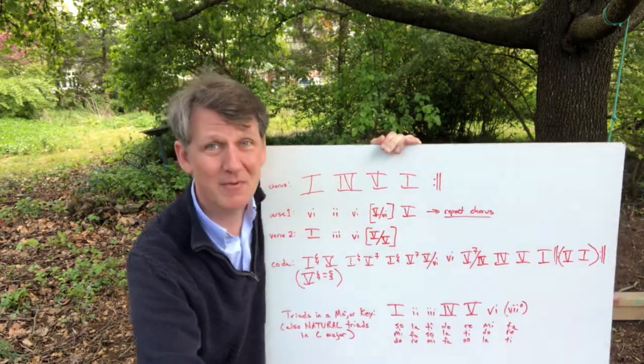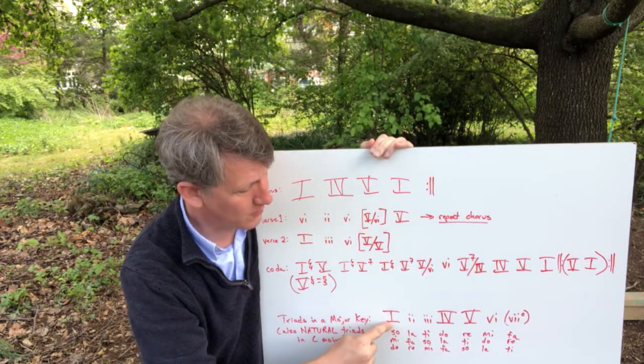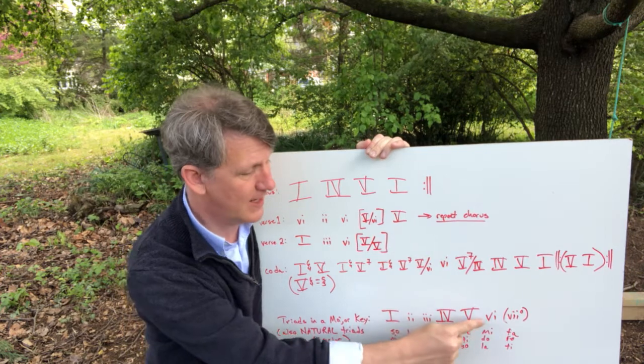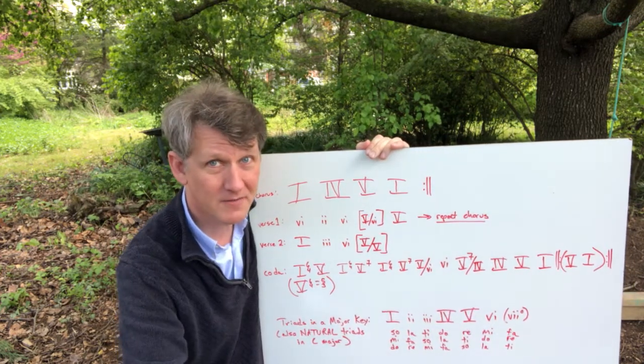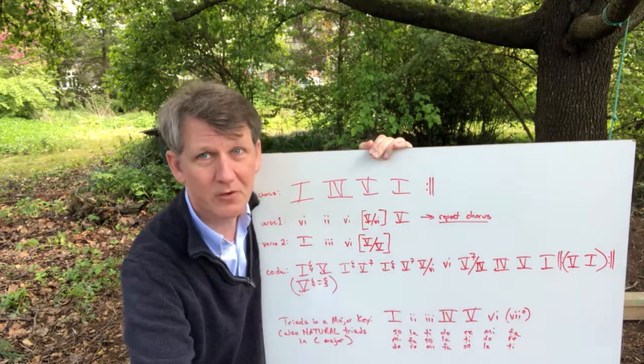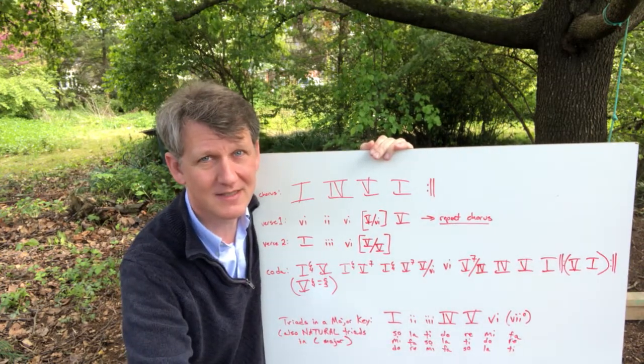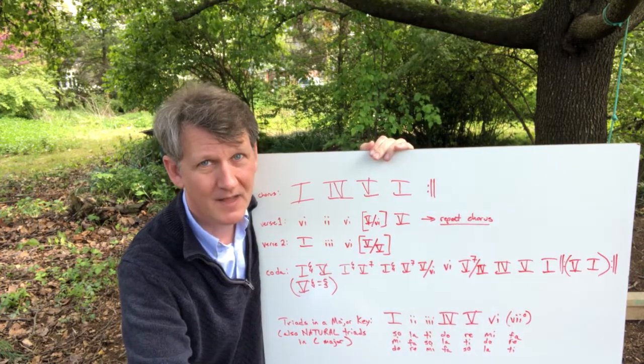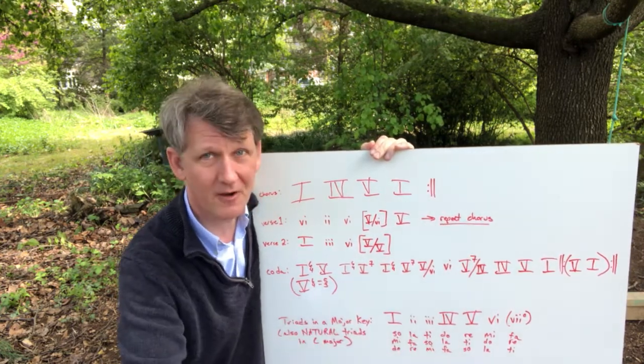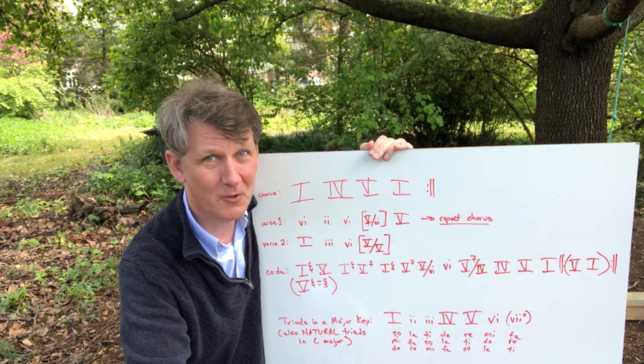So just remember a major key: chords 1, 4, and 5 are major. Chords 2, 3, and 6 are minor. This is all if you don't add accidentals. And the chord built on the seventh scale degree is diminished. And if you see accidentals, you can figure it out from there, what the quality of the chord is.